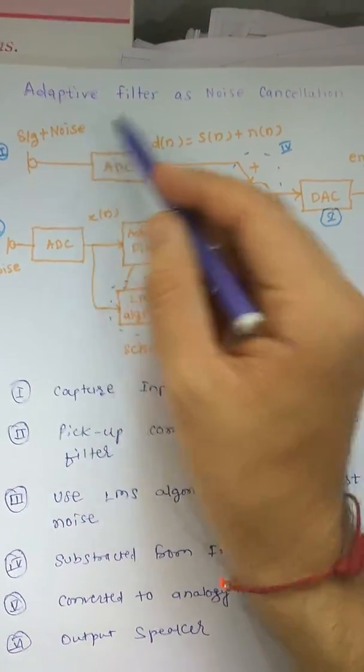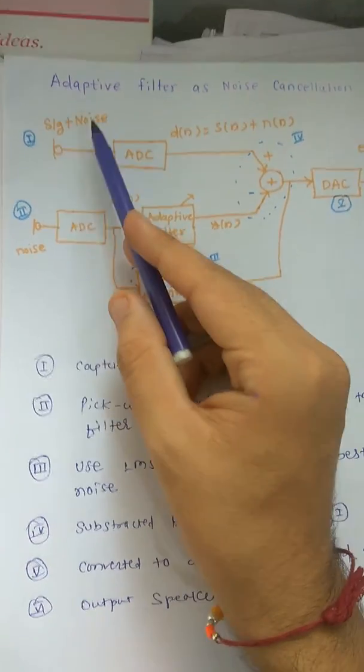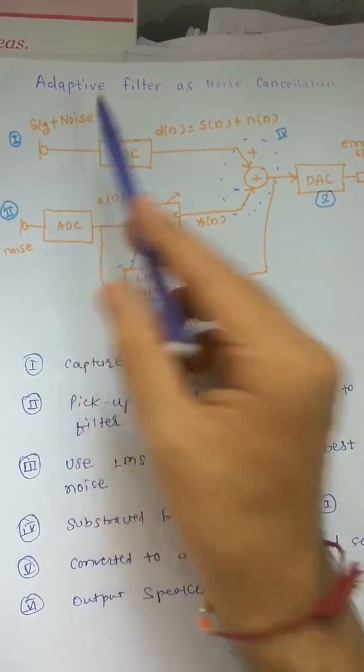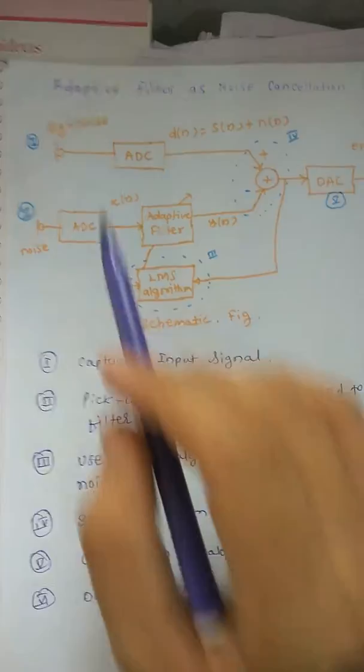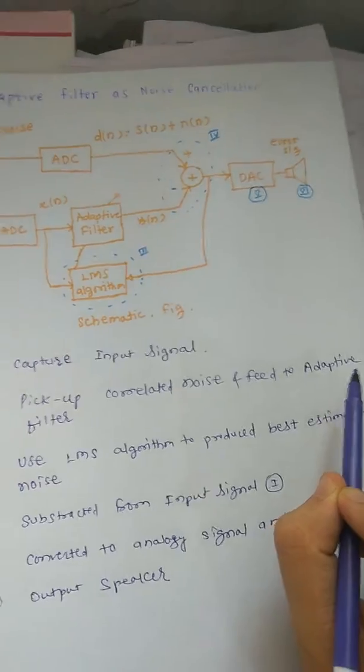Here we are talking about adaptive filter as noise cancellation. First thing, first, we give signal and noise, capture input signals. Second, the second microphone here picks up the correlated noise and feeds it to the adaptive filter.